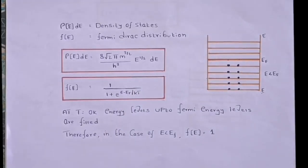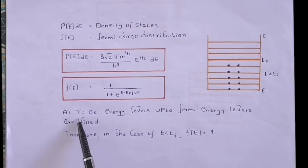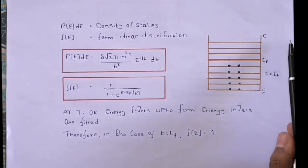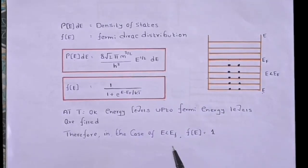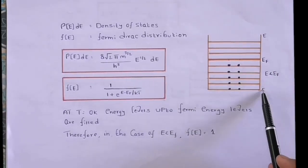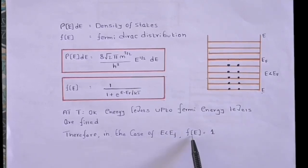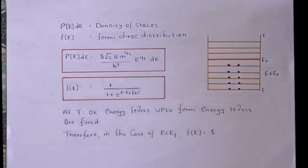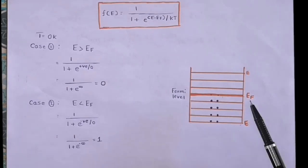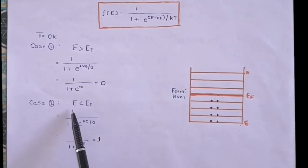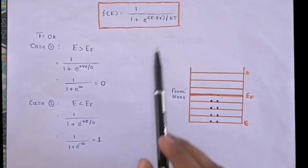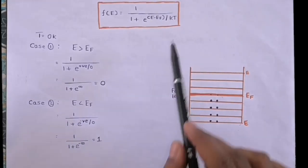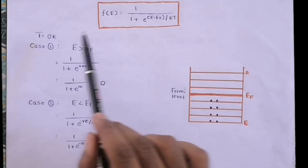At absolute temperature T = 0 K, energy levels up to the Fermi energy are filled and energy levels above this level are vacant. Therefore, if the energy level is below the Fermi energy level (E < E_F), then F(E) = 1. To see why: F(E) = 1 / (1 + exp((E − E_F) / kT)). Since E < E_F, the term (E − E_F) is negative, and since T = 0 K, kT = 0, giving exp(−∞).